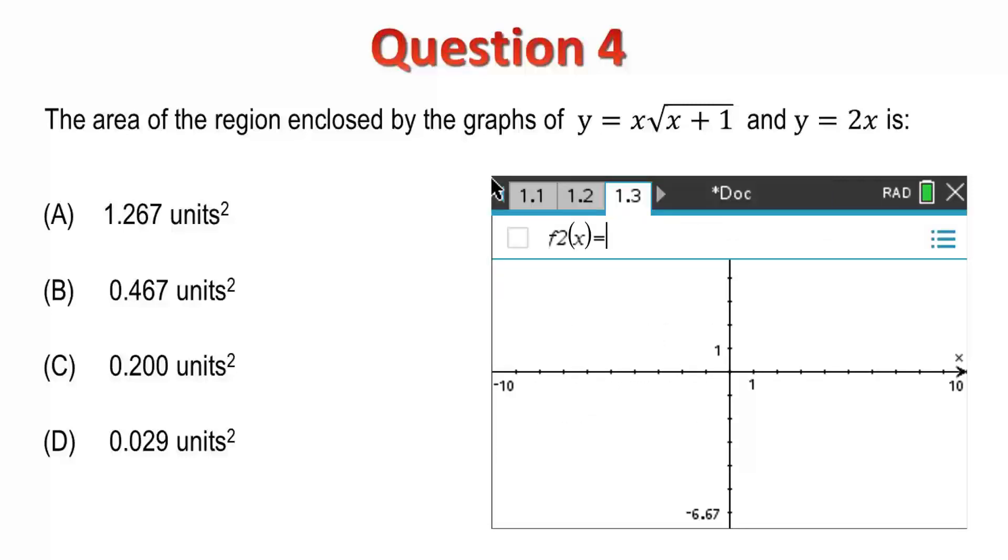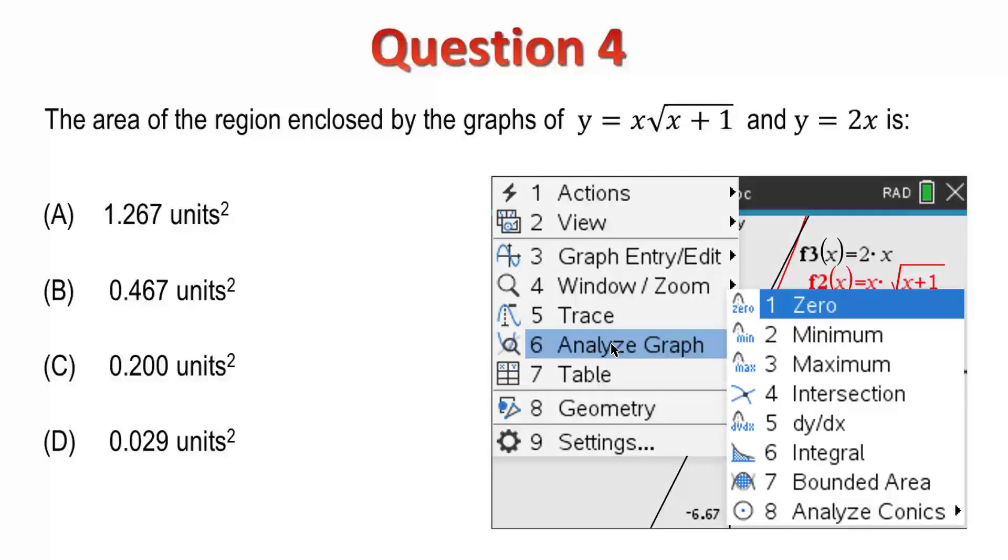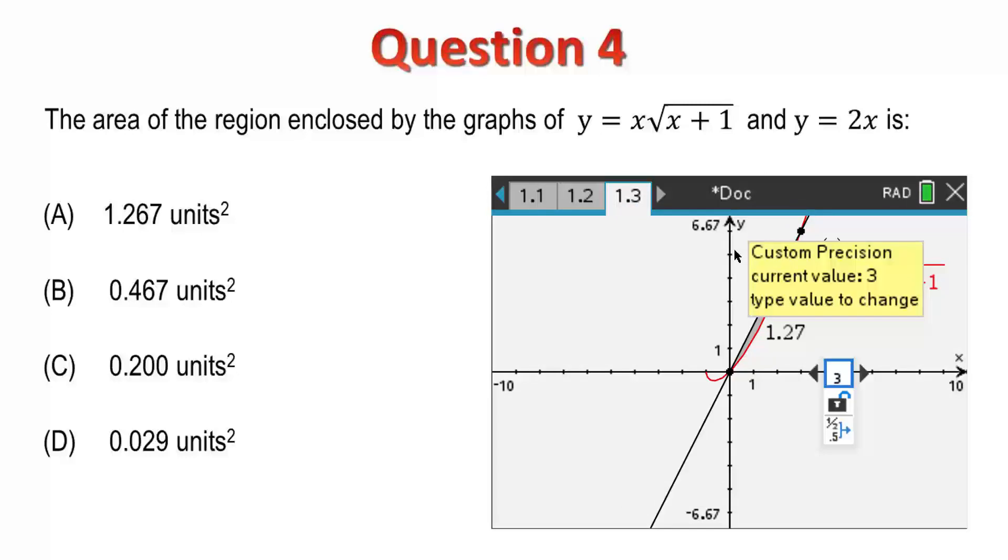I'll enter my functions x by root x plus 1 and also y equals 2x. I'll use the analyze graph option and see that I have bounded areas. I'll select the left point and the right point being the intersection of the two graphs. And, if needed, I can change the precision that's been displayed. Based on my answer, I'm going for option A.